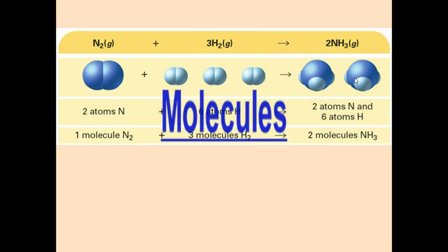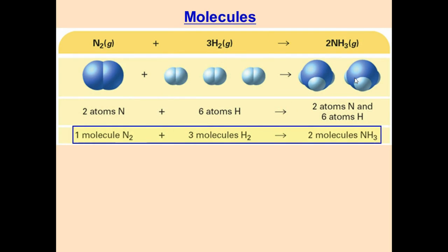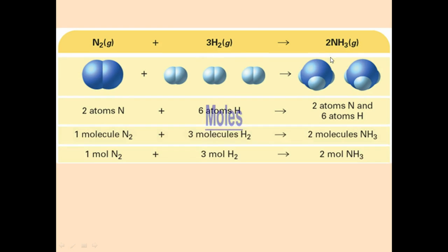Molecules are calculated from the coefficients. We have a coefficient of 1 for N2, so 1 molecule; a coefficient of 3 for H2, so 3 molecules; and a coefficient of 2 for NH3, so 2 molecules. This will always equal the coefficient, so just look at the coefficients for molecules. The same is true for moles — just look at the coefficients.